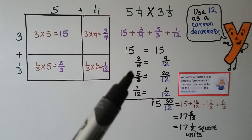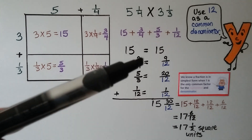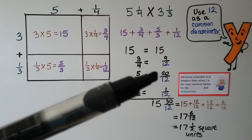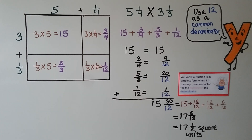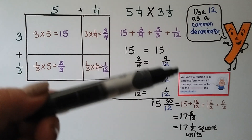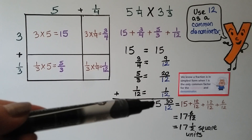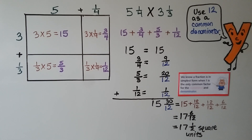We can keep five thirds as is and use twelve as a common denominator for fourths, thirds, and twelfths. Three fourths equals nine twelfths, five thirds equals twenty twelfths, and one twelfth is one twelfth. Adding the twelfths: nine plus one is ten, plus twenty is thirty. We have thirty twelfths. We bring down our whole number fifteen: fifteen and thirty twelfths. That equals fifteen plus twelve twelfths plus twelve twelfths plus six twelfths — which gives us seventeen and six twelfths. We can simplify that to seventeen and a half square units.